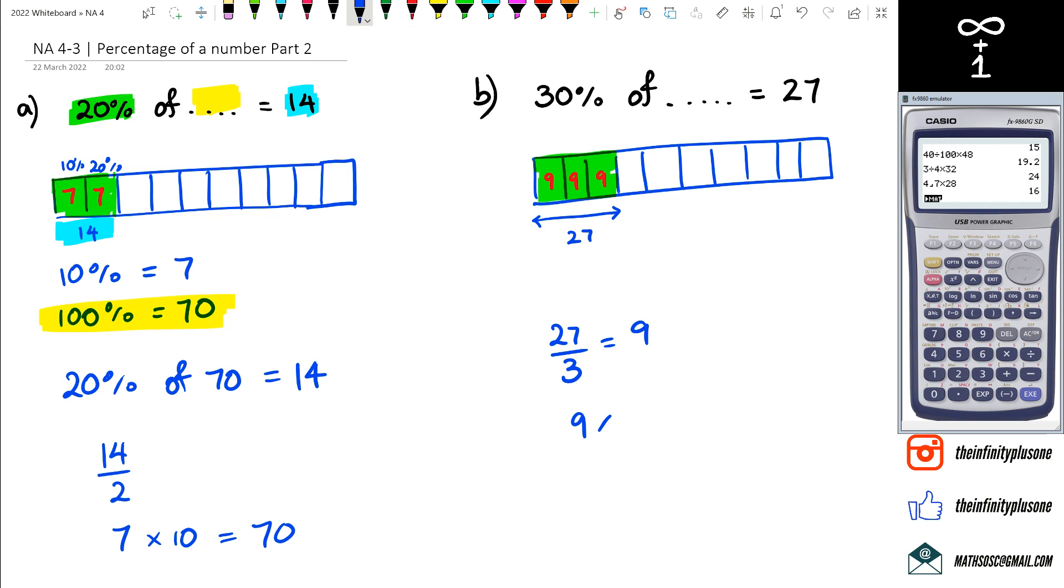And because I've got 10 boxes all together, 9 times 10 is equal to 90. So my answer for this question is actually going to be 90, and for question A it was actually 70 right there.